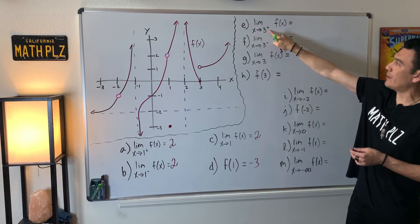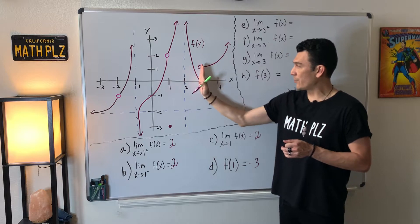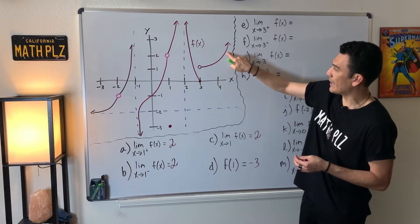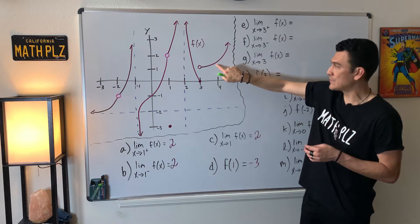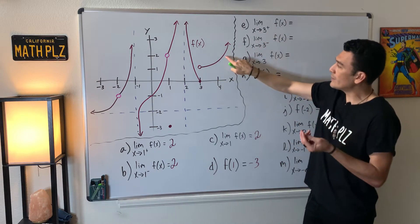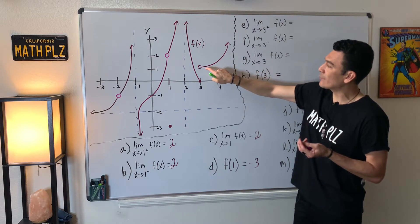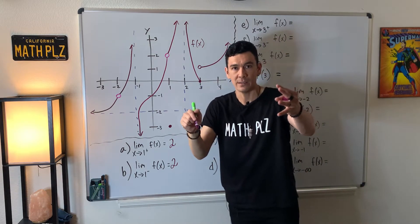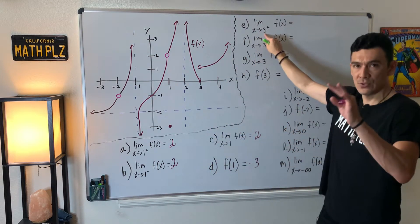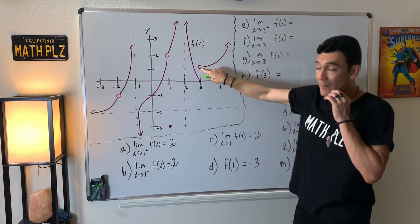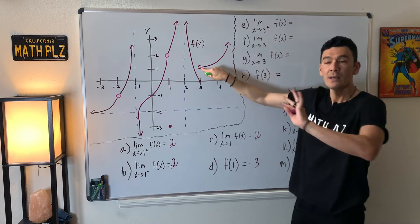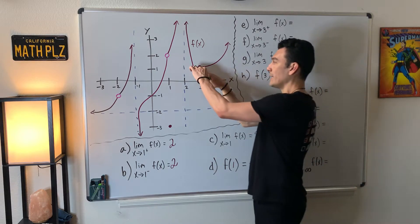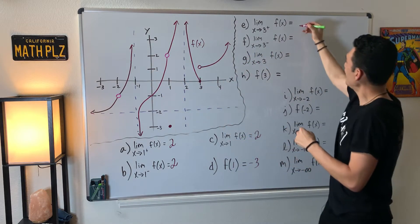Now let's approach three from the right. Three is right there, and my body is positioned to the right. I'm grabbing points whose x coordinates are getting closer to three from the right. I can't get all the way there because there's a hole, but getting close enough — the y coordinate at this location is positive one. So the answer is positive one.